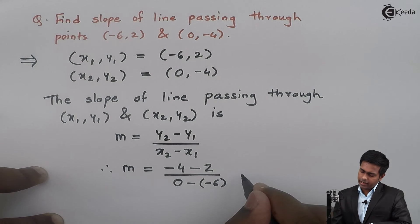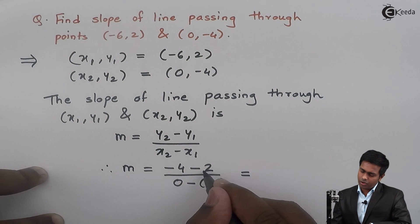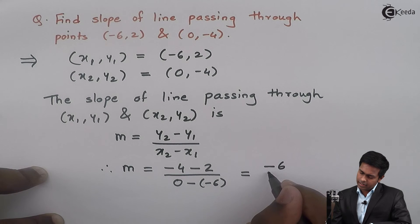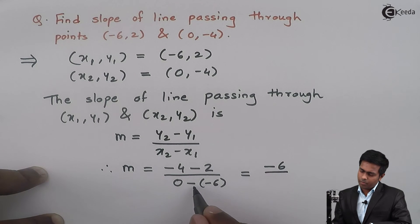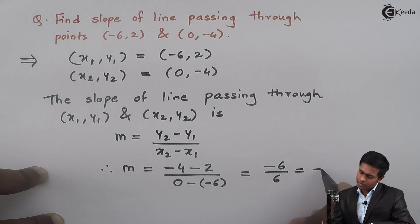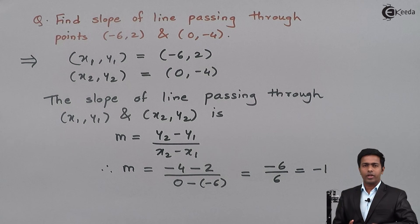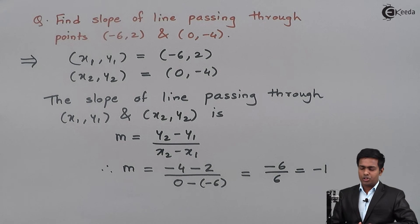So here we will get -4 - 2 that is -6, and 0 - (-6) is 0 + 6 = 6, so the value is -1. So here the slope is -1. Thank you.